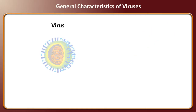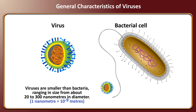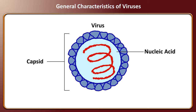General characteristics of viruses. Viruses are smaller than bacteria, ranging in size from about 20 to 300 nanometers in diameter. Viruses consist of nucleic acid surrounded by a protein coat called a capsid. The capsid is composed of small structural units called capsomeres, and it protects the nucleic acid from inactivation by outer physical conditions.